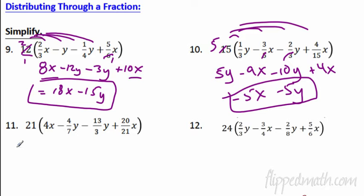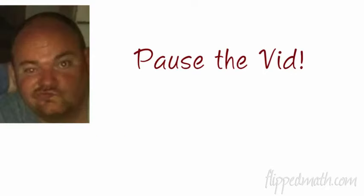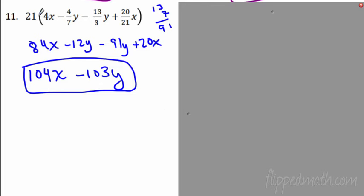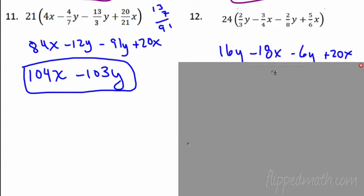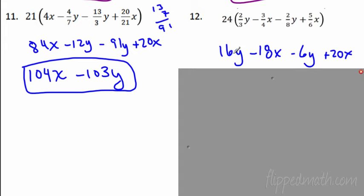Pause the video and do numbers 11 and 12. For number 11: multiplying through by 21 — 21 times 4X is 84X; 7 cancels with 21 leaving 3, and 3 times 4 is 12; 7 times 13 is 91; the 21s cancel leaving 20X. Simplifying gives 104X minus 103Y. For number 12: the LCM is 24. Multiplying through — cancel to get 8 times 2 is 16, and the next terms cancel to give 6.